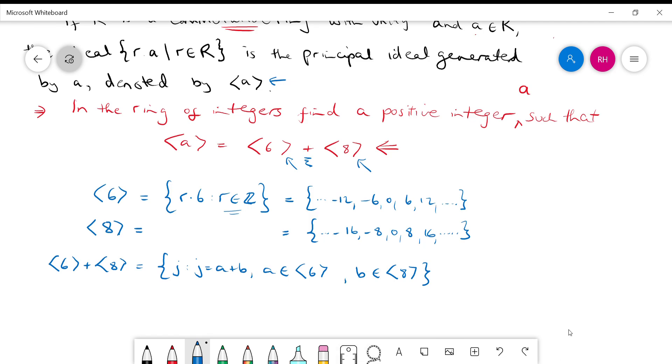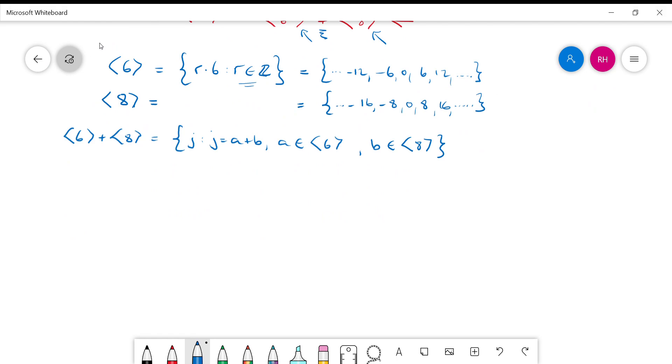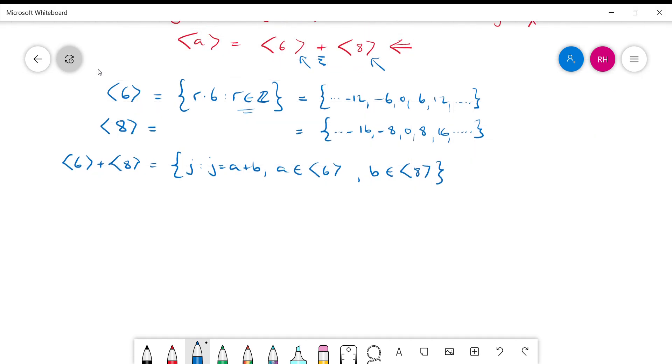So what this is saying is that if we want to construct this sum of these two ideals, we have to take an element from this set and an element from this set and add them up, and it's all combinations. So it's all combinations of something from here plus something from here.